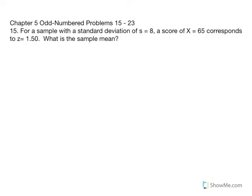Chapter 5, Odd Number Problems 15 through 23. Problem 15: for a sample with a standard deviation equal to 8, a score of x equals 65 corresponds to a z-score of 1.5.